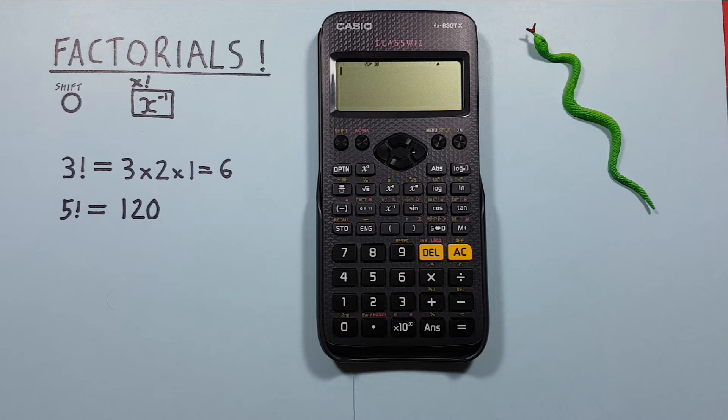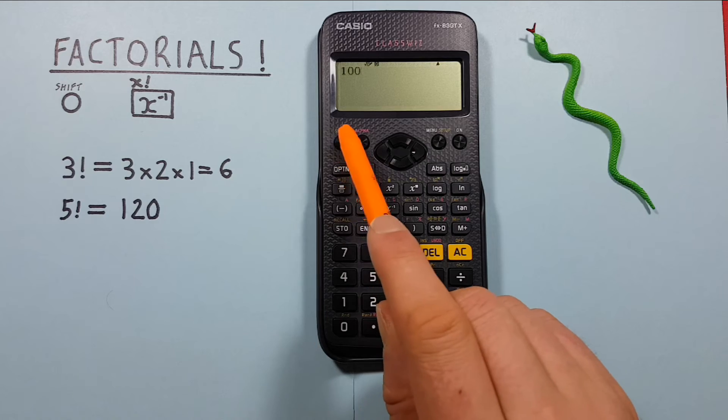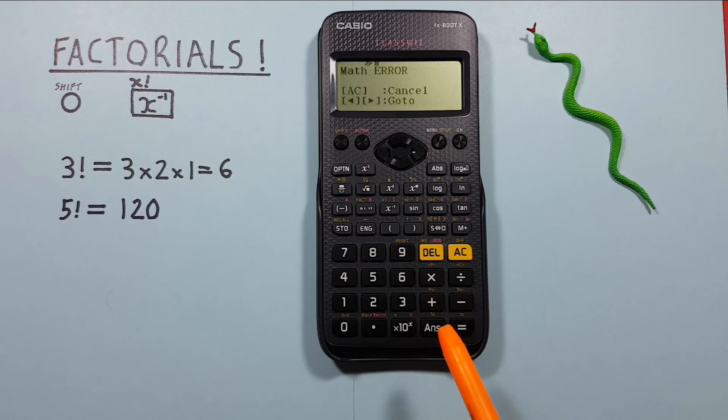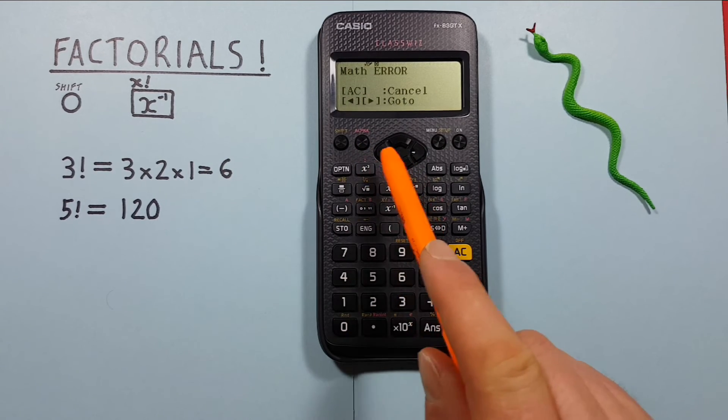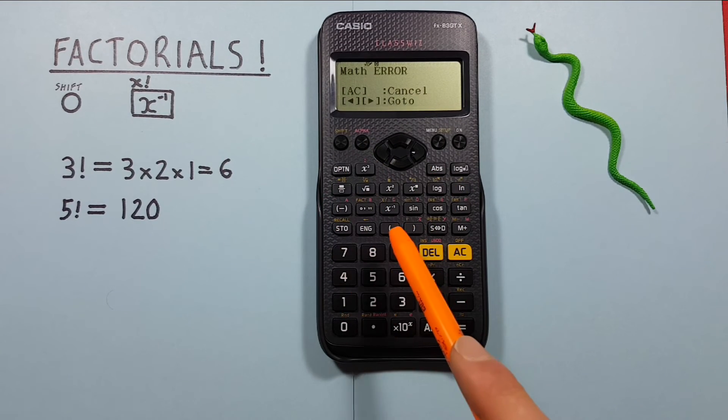But what happens if we're trying to do a very large factorial like let's say 100 factorial. And we try this and we get an error. That happens because the resulting number is just too large for this calculator to handle.